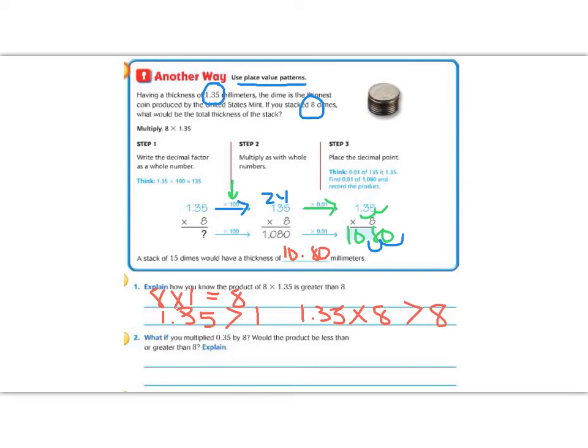Question number 2 says, what if we multiplied 0.35 by 8? Would the product be less than or greater than 8? Okay, well if I'm multiplying by less than 1, if I multiply by 1, my answer is going to be 8. But if I multiply by less than 1, well then my answer has to be less than 8.